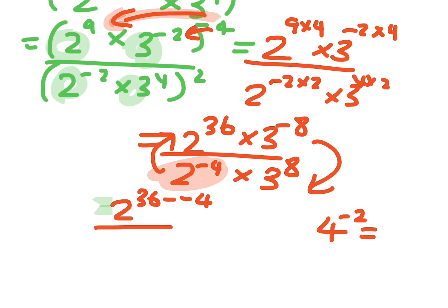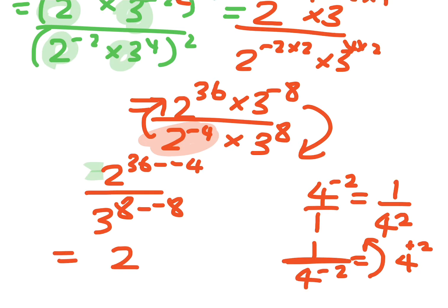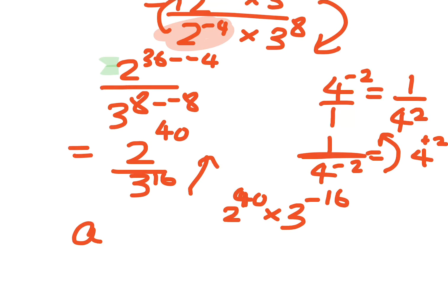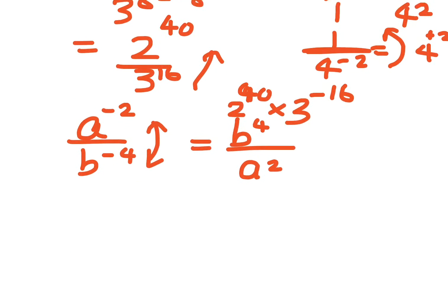I want you to realise that if you have 4 to the minus 2, when you bring it down the bottom it becomes 1 over 4 to the 2. But when you have 1 over 4 to the minus 2, when you bring it up to the top it becomes 4 to the positive 2, because when you divide you subtract the indices, and minus minus 2 is positive 2. So it's 3 to the 8 minus minus 8, so I've got to change that sign. So it's 2 to the 40 and 3 to the 16. If you move that up it would be 2 to the 40 times 3 to the minus 16. So if you have a to the minus 2 and b to the minus 4, if you move a to the minus 2 down the bottom it becomes a to the 2, and b to the minus 4 at the top becomes positive b to the 4.